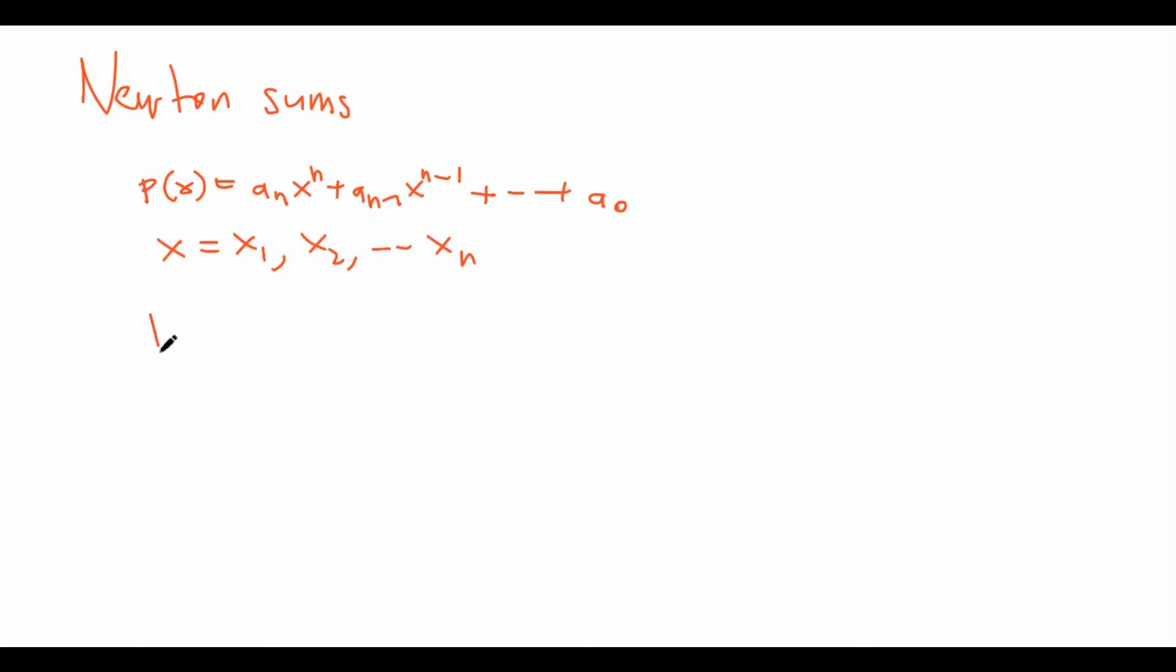We want to find the sum. Let's denote P_k equal to x_1^k plus x_2^k plus dot dot dot all the way to x_n^k, and we want to find this for any positive integer k. What Newton's sums does is give us a recursion to calculate P_k.